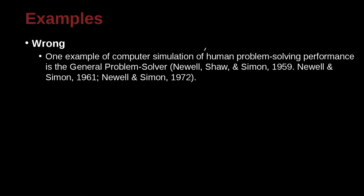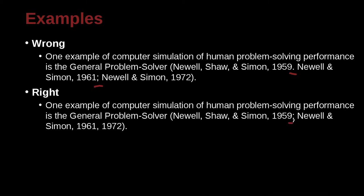One example of computer simulation of human problem solving is the General Problem Solver (Newell, Scholl, & Simon, 1959; Newell & Simon, 1961, 1972). Right away you can see the problem: one citation uses a period and another uses a semicolon. The correct way to combine different authors and papers is to use the semicolon. And if you have the same authors twice, you don't repeat their names — just write the different dates separated by a comma.